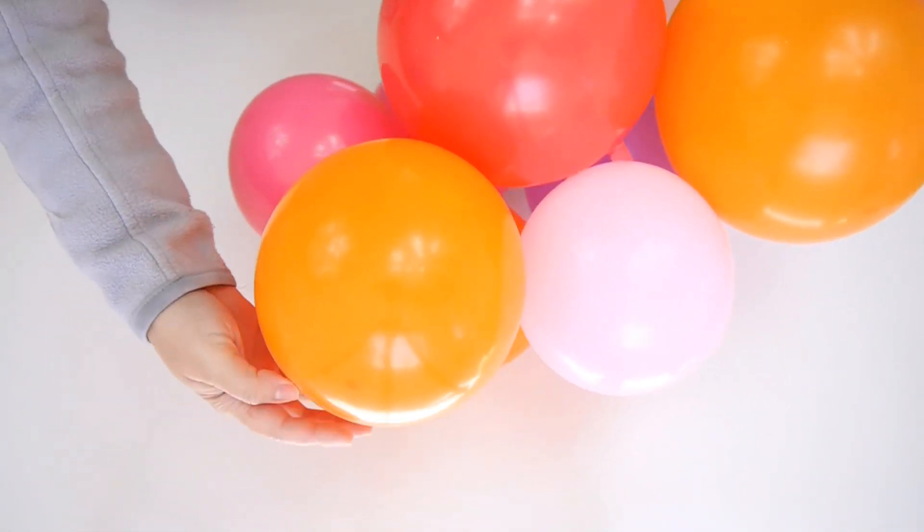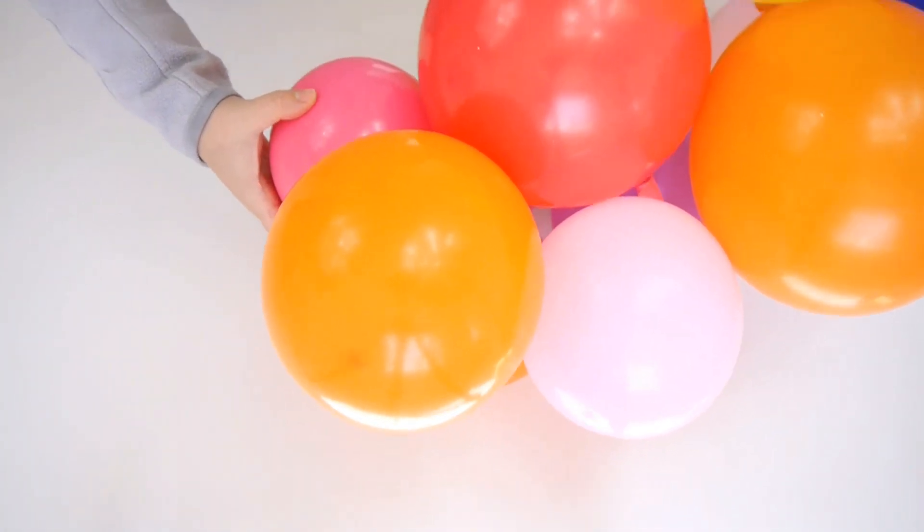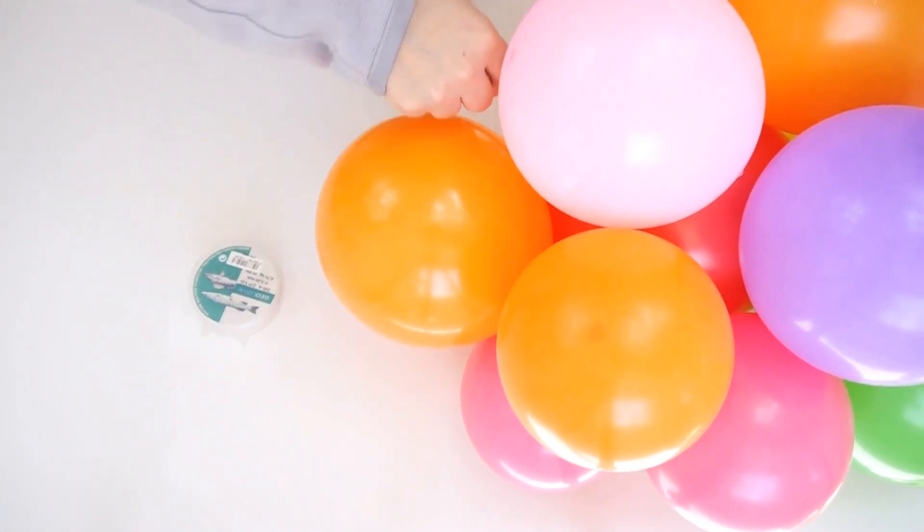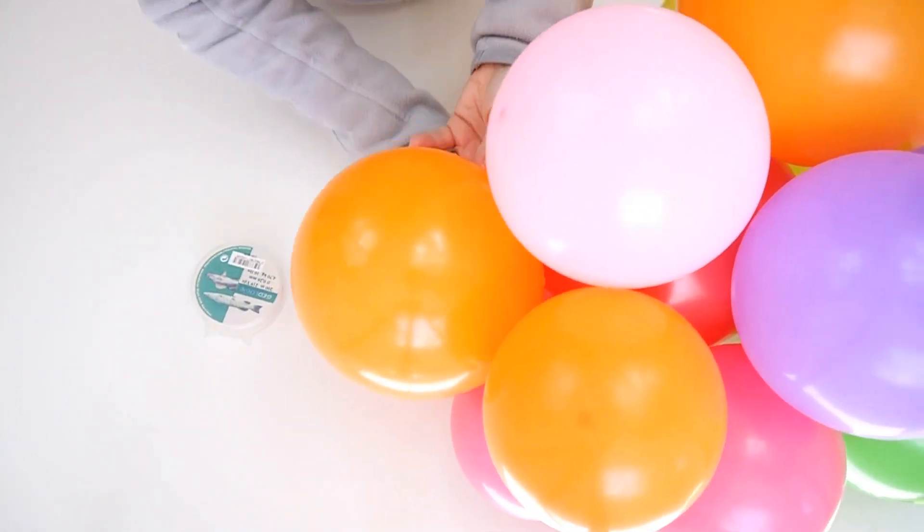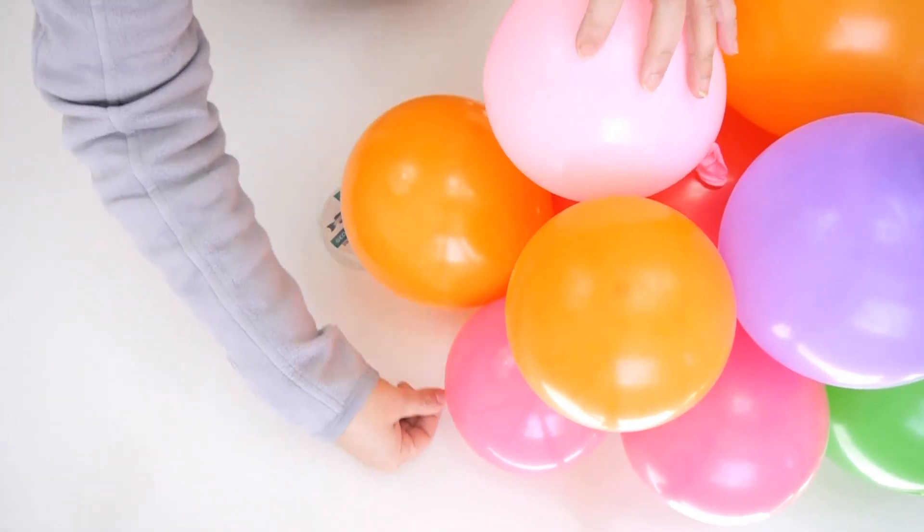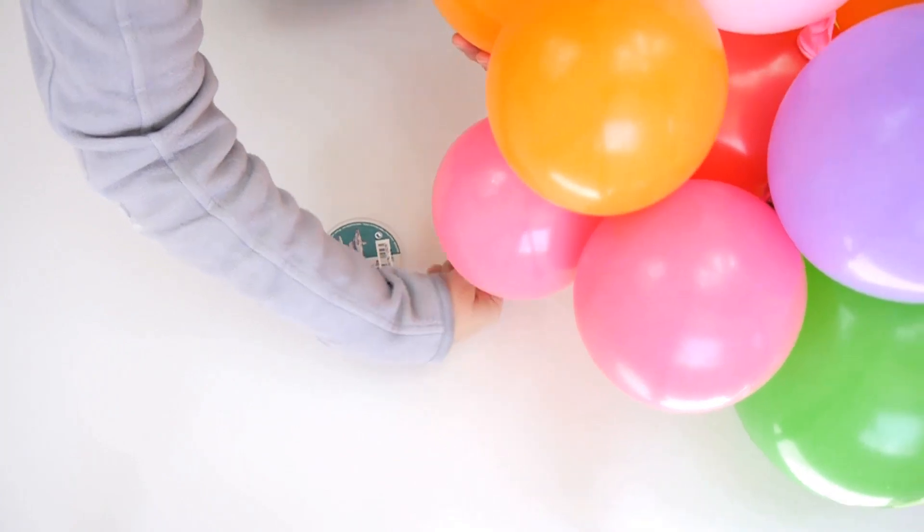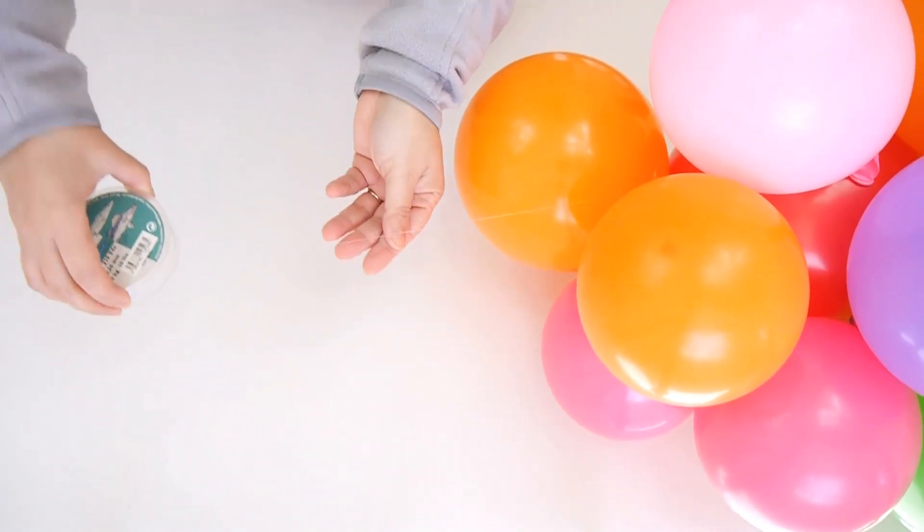Once you've finished, you're just going to tie the remaining piece of fishing line around the last balloons to secure everything in place. Make sure everything is nice and tight and secure so the balloons won't come off. Just snip off a little bit at the end.